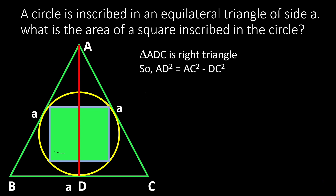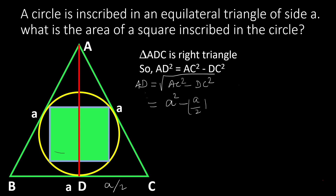AD² = AC² − DC² according to the Pythagorean property. So AD = √(AC² − DC²). Since AC = A, we have A² minus DC. DC is half of A because AD is the median and D is the midpoint of BC. So we get A² minus (A/2)².